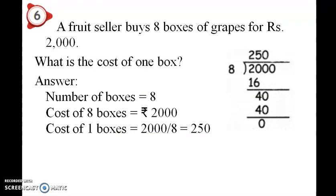A fruit seller buys 8 boxes of grapes for rupees 2000. That is a fruit seller — 8 boxes of grapes. That is 200 per box. So 2000 divided by 8. In a remarkable store, for all trees it is 90.